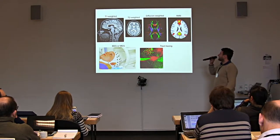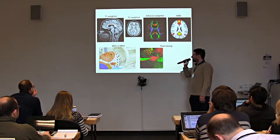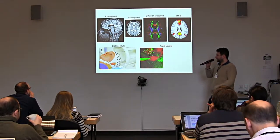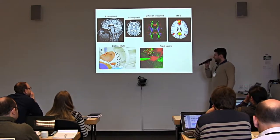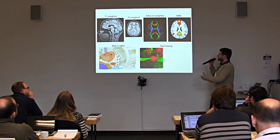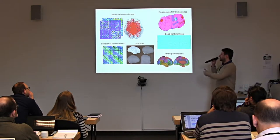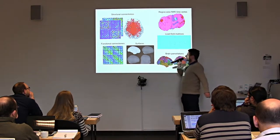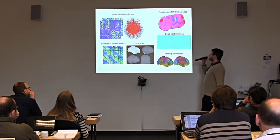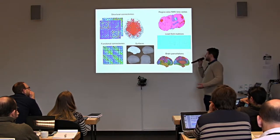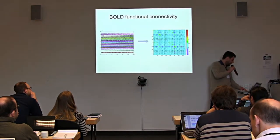The kinds of data you typically have: T1-weighted, T2-weighted MRI anatomical 3D scans, diffusion-weighted data, fMRI, and probably also EEG — we do simultaneous EEG and fMRI recordings. You can also use MEG data or tract tracing data from macaque studies to constrain structural connectomes. From this you get structural connectomes, region-wise fMRI time series, functional connectomes, surfaces for surface simulations, lead field matrices for source imaging, and brain parcellations.